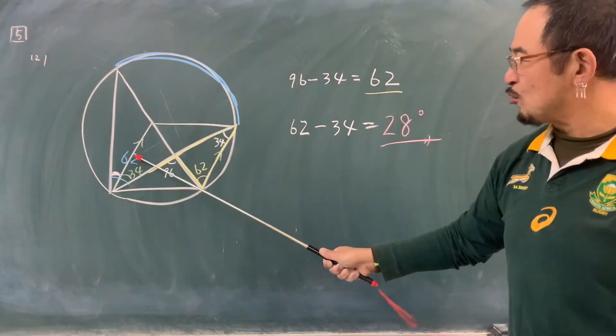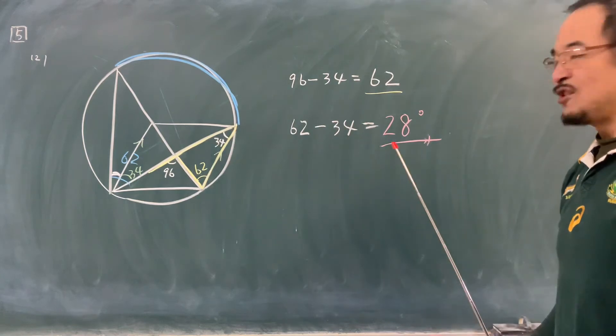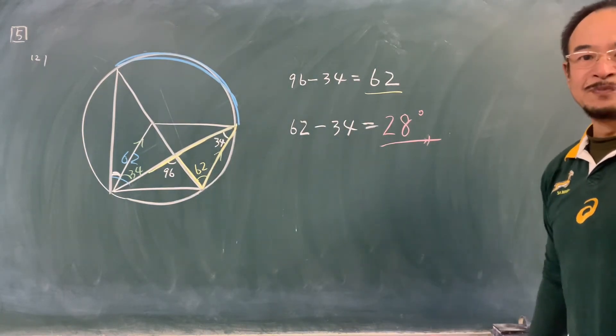で、ここの62度ですがこの弧に対する円周角です。では同じ弧から出た円周角、こちらも62度であると分かります。次、平行四辺形ですからこことここは平行です。34度、ここも34度、平行線の錯角が等しいってやつですね。そうすると求めるところは62マイナス34で28度ということになります。